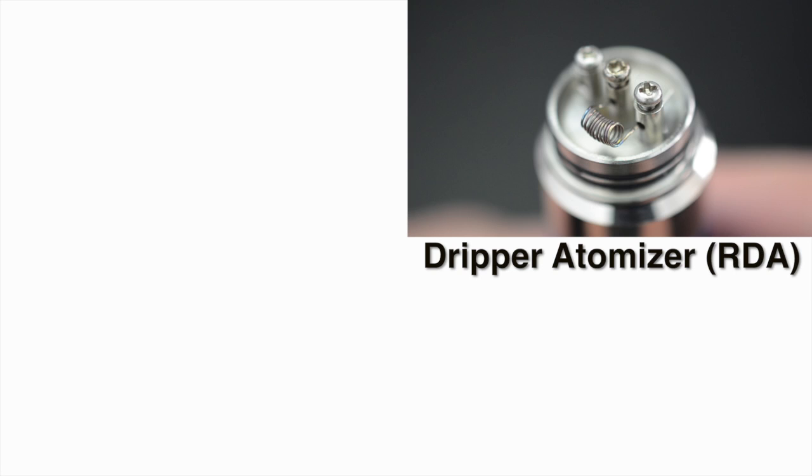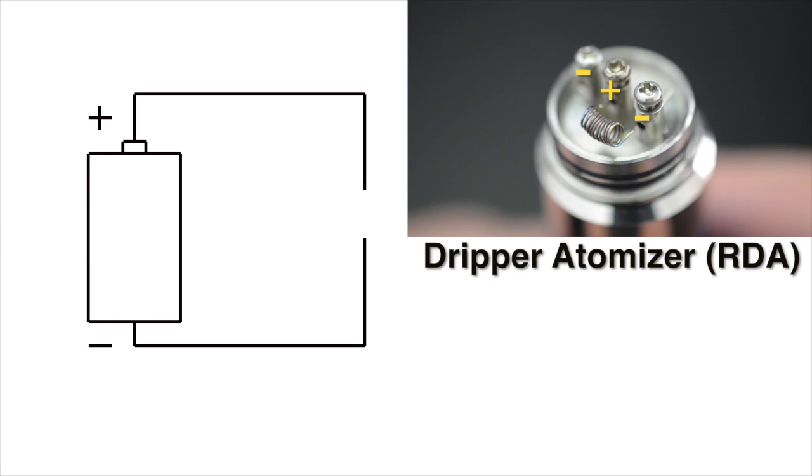This is a dripper atomizer with three posts. The center post connects to the positive side of the battery and the other posts connect to the negative side of the battery. Since this is only a single coil build, we do not need to use the extra posts. I'll draw this out in a diagram, so it looks something like this.